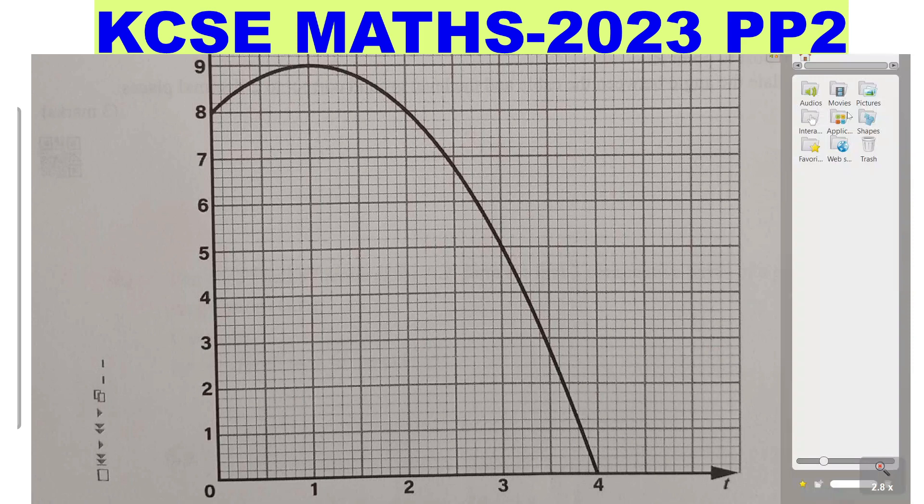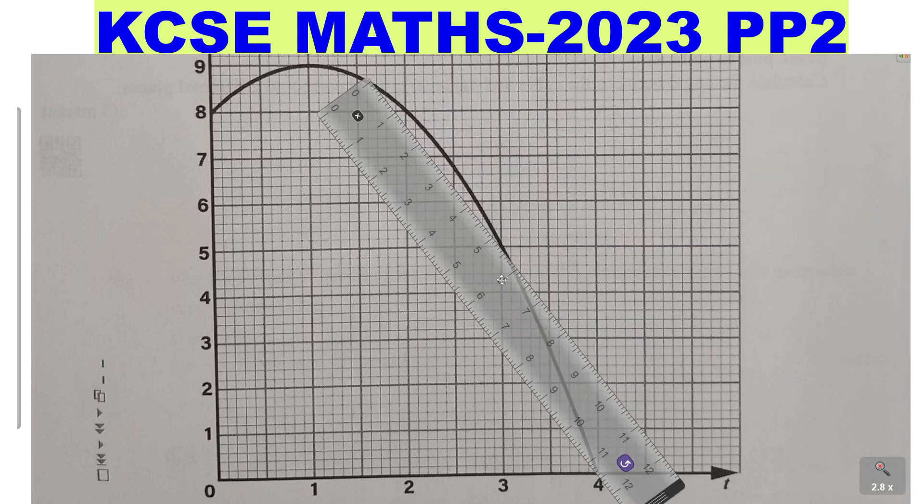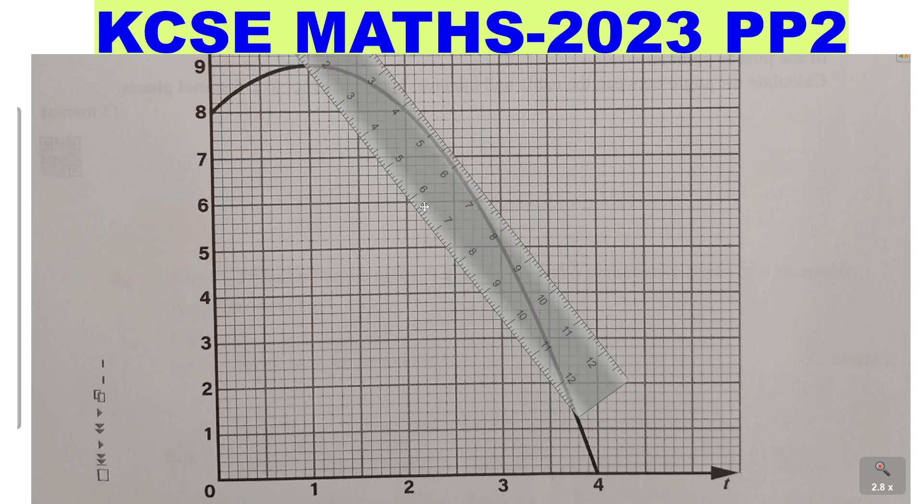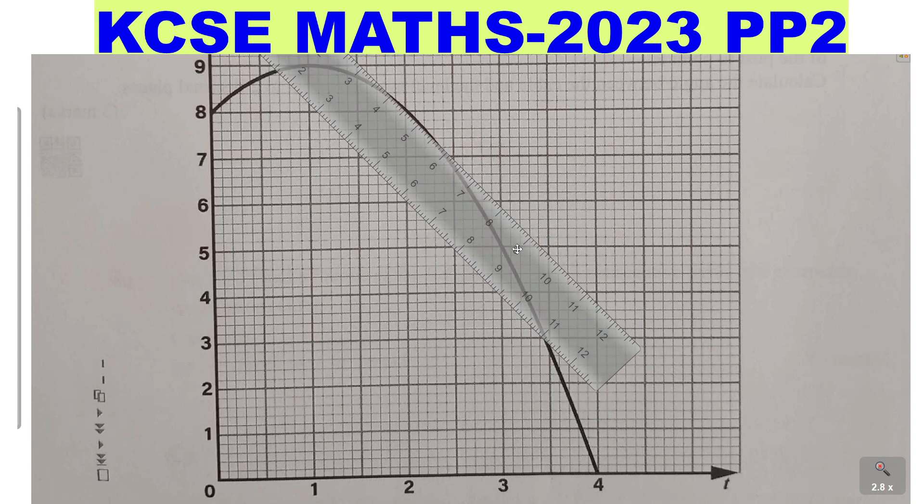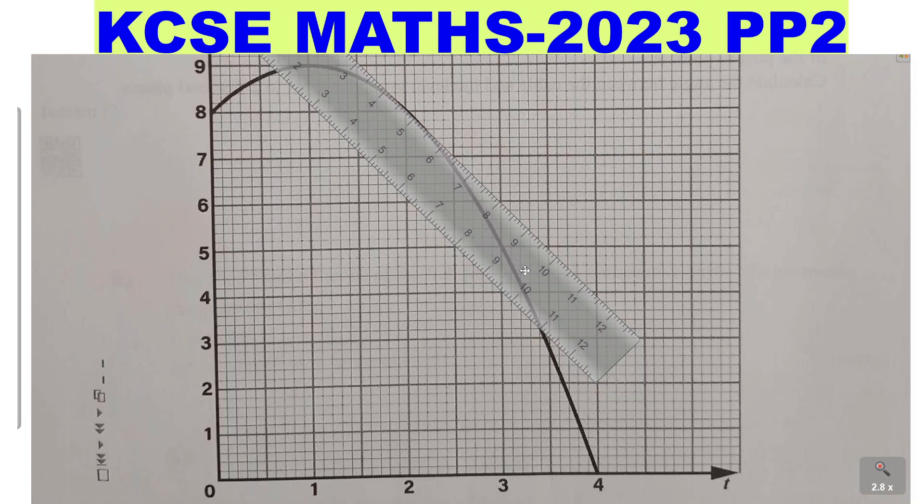So take a ruler and draw a tangent. That tangent you've said that it is tangent at t equals 2. So this is the point where you're drawing the tangent. The tangent should touch that point. So draw the tangent. So that is the tangent at t equals 2.